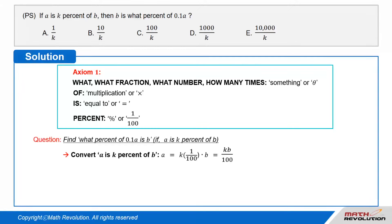We have to find out what percent of decimal 0.1 times A is B, if A is k% of B. This question seems a little tricky, but keep your chin up. Approach it using the same method.